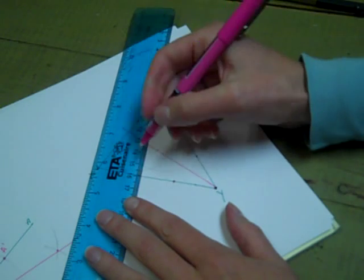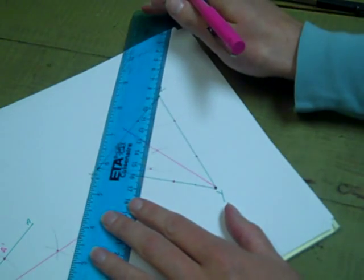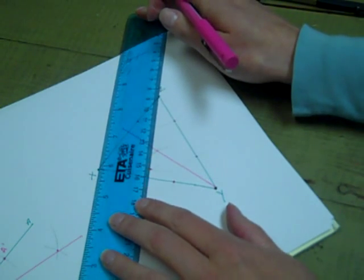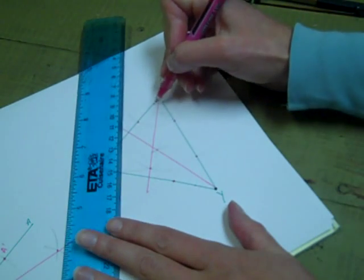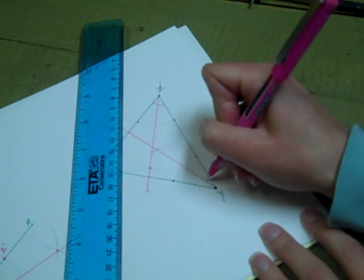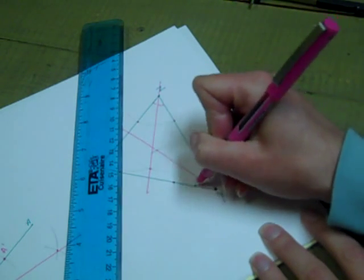And again, when I connect my intersecting arcs, the point of my intersecting arcs to point Z, I should bisect angle Z and again I've bisected angle Y.